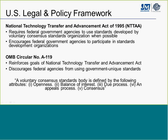Regarding the U.S. legal and policy framework, we have the National Technology Transfer and Advancement Act of 1995, OMB Circular A-119, and the policy for federal use of standards. All federal agencies must use voluntary consensus standards in lieu of government-unique standards in their procurement and regulatory activities, except when inconsistent with law or otherwise impractical. In those circumstances, the agency must submit a report describing the reason to the Office of Management and Budget through the National Institute of Standards and Technology.